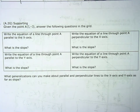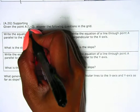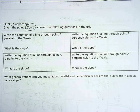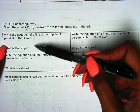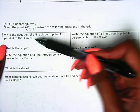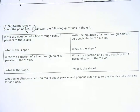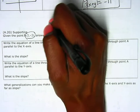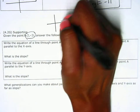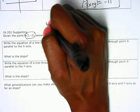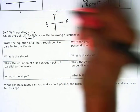Now looking at number 8, it says given the point A, which is at (5, negative 3), answer the following questions. Looking at all of these questions, I can see that we're either going to be parallel or perpendicular to the x or y axis. So first thing I'm going to do is quickly sketch a graph and label my axis, x and y.